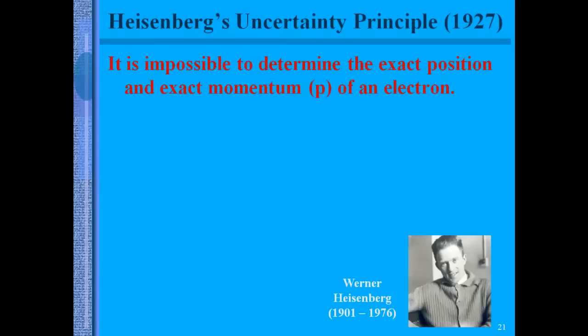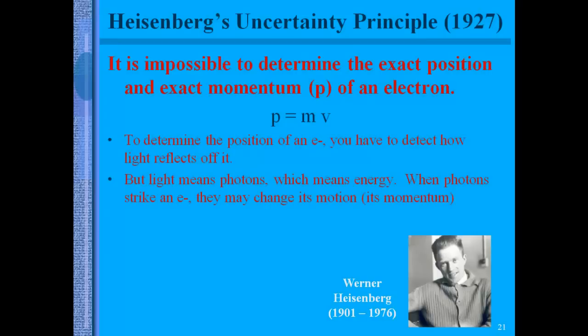Heisenberg's uncertainty principle states that it's completely impossible to determine the exact position and exact momentum of an electron. The reason is that in order for us to determine the position of an electron, you have to detect how light reflects off of it. But light means that you're going to be exposing the electron to photons, and that's energy. So when the photons strike an electron, the energy is going to cause the electron to change its motion, and therefore its momentum. So electrons cannot be moving in well-defined circular orbits around the nucleus. Electrons are constantly emitting and absorbing different amounts of energy. And because of this, it will change their location and their momentum in the atom.